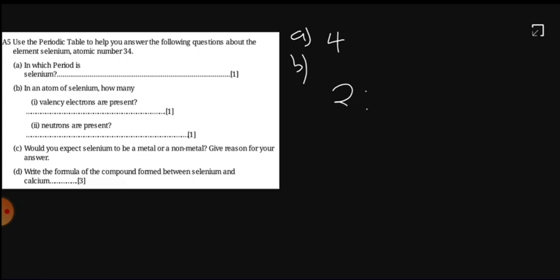It has got an electronic configuration of 2, 8, 18, 6. So when you add this, it should give you 34. So what are we saying? How many electrons does it have in the outermost shell? 6. So the answer here is 6.